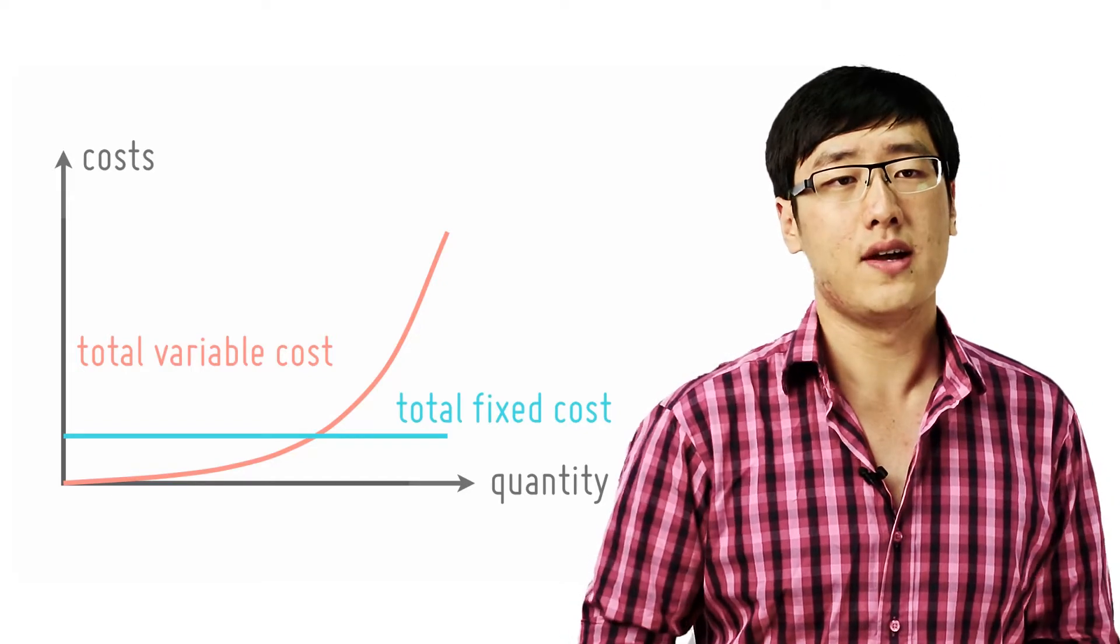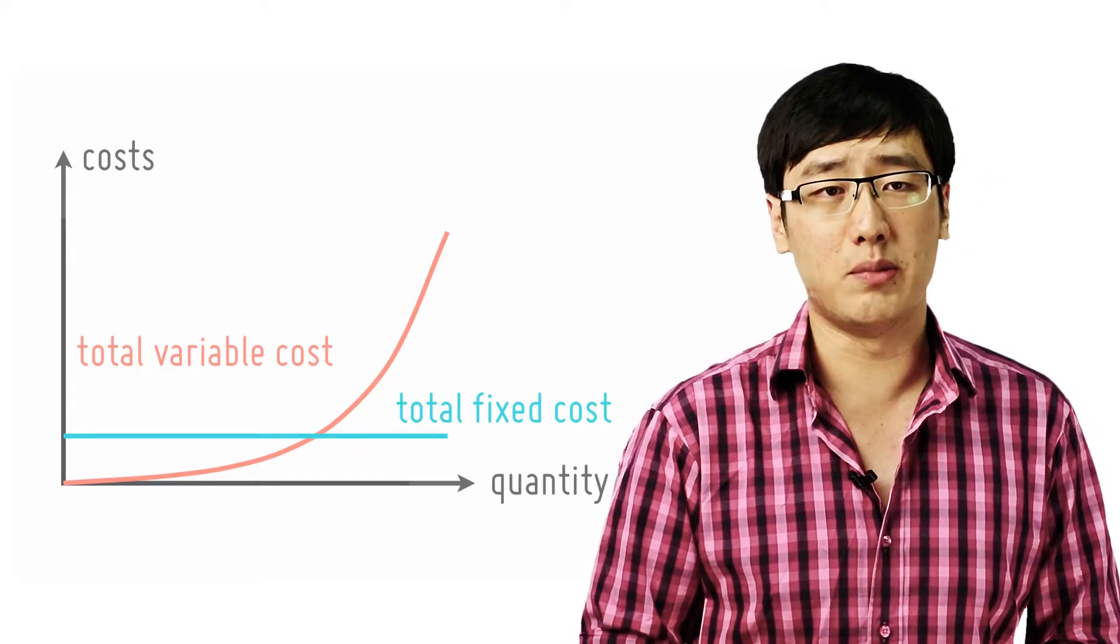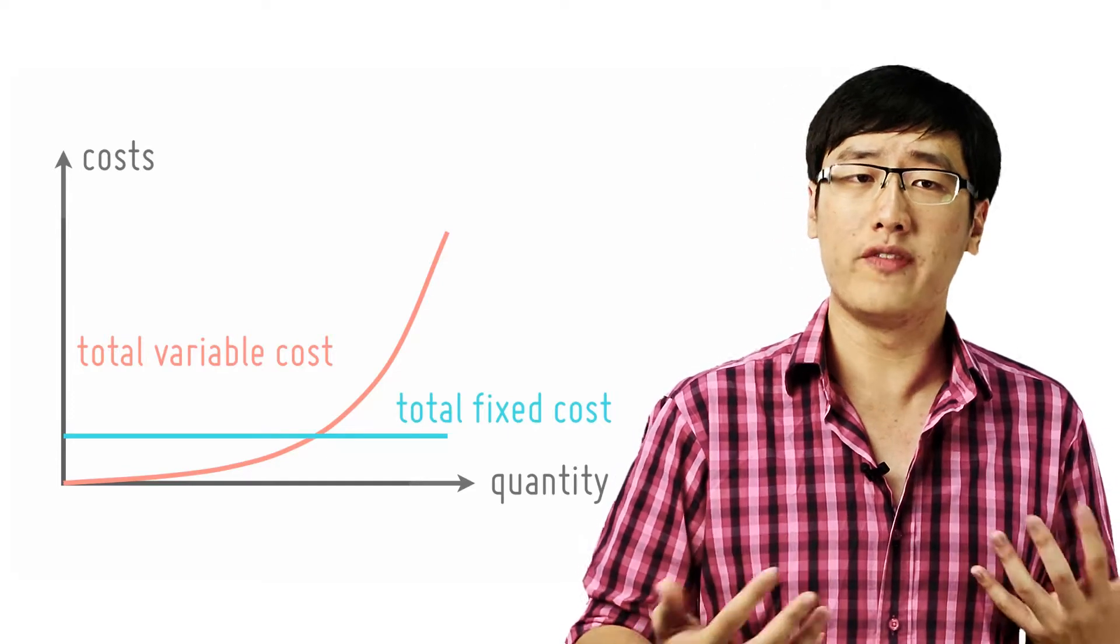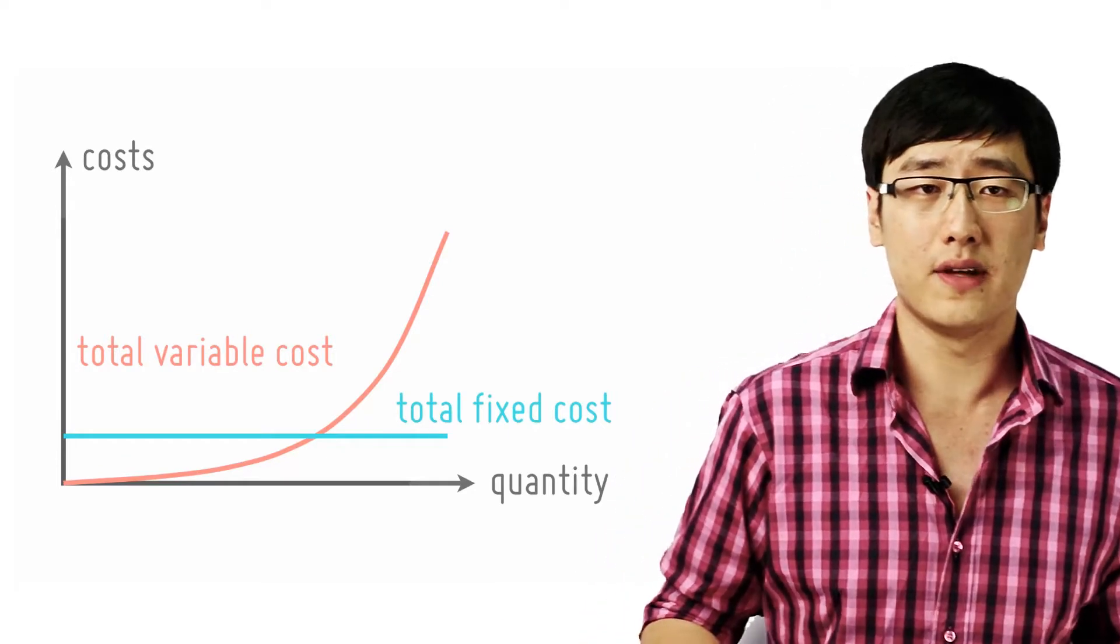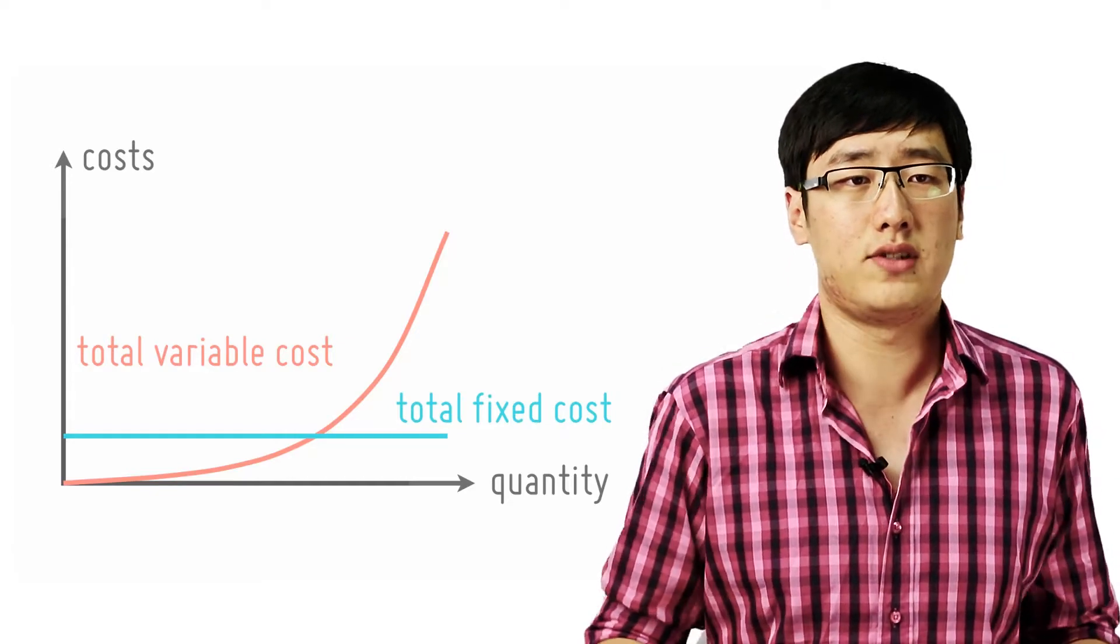The total variable cost however changes. With zero output, no variable factors will be used. The total variable cost or the TVC curve is hence zero when the production is at zero.